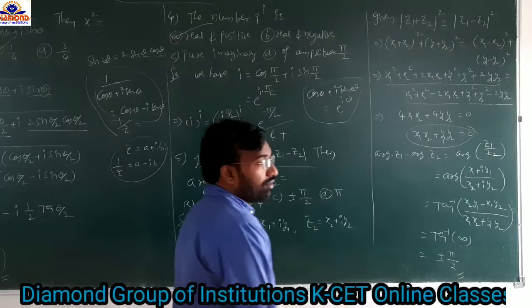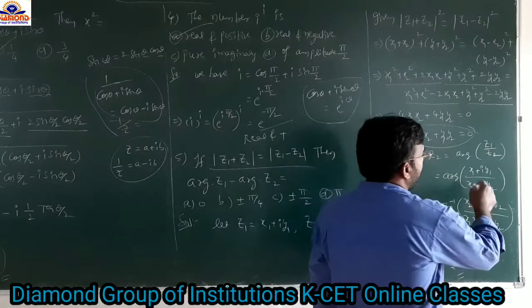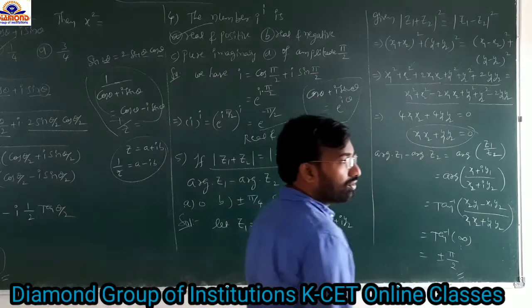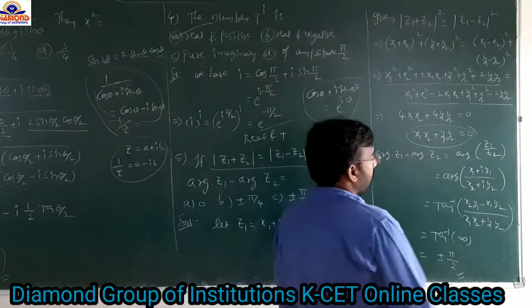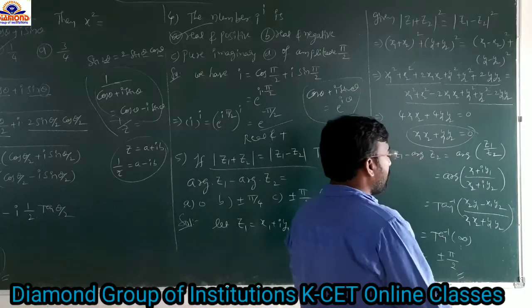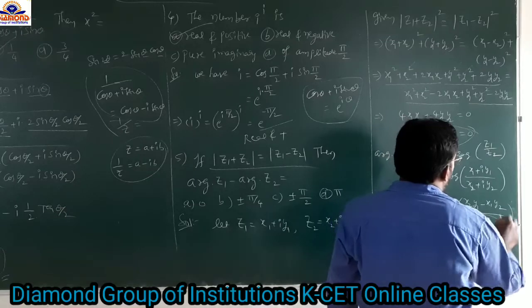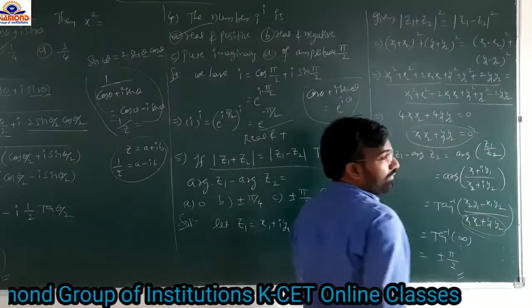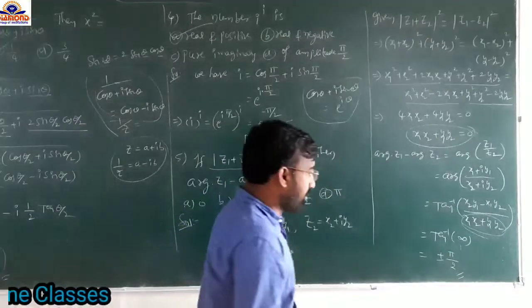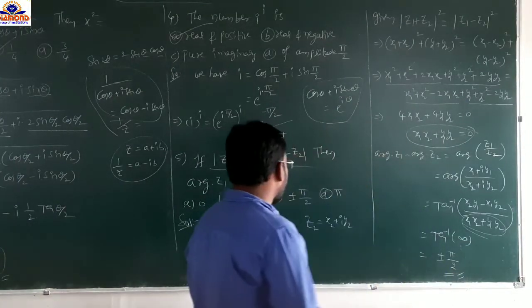Calculating arg(z₁) minus arg(z₂) equals arg(z₁/z₂). That equals tan⁻¹ of (x₂y₁ minus x₁y₂) divided by (x₁x₂ plus y₁y₂). Since the denominator x₁x₂ plus y₁y₂ is already 0, we get something divided by 0, which is infinity. So tan⁻¹(∞) equals plus or minus π/2. So option is c.